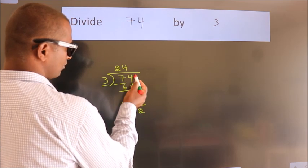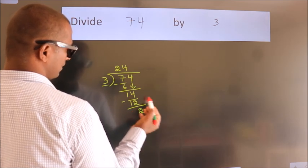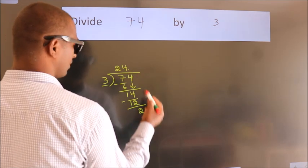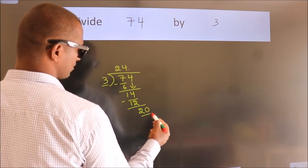After this, no more numbers to bring it down. So, what we do is we put dot take 0. So, 20.